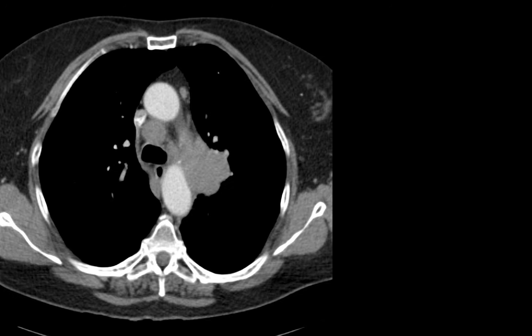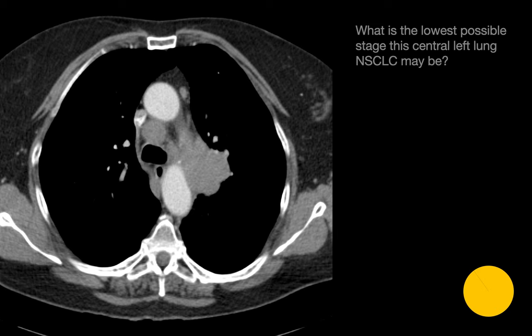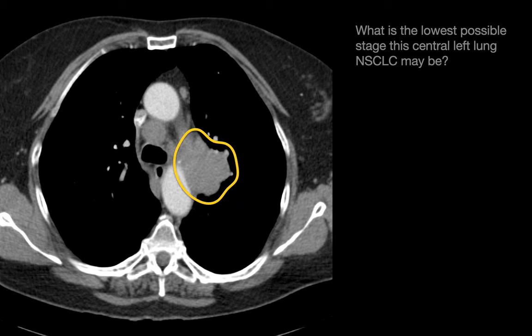This is a non-small cell lung cancer case. What's the lowest possible cancer stage this central lung cancer case may be? The imaging features include a central left lung mass that appears to invade the left hilum and mediastinum, and a bulky mediastinal lymph node that almost certainly lies to the right of the left lateral tracheal wall. The left lateral tracheal wall distinguishes right from left mediastinal lymph nodes superior to the tracheal bifurcation, making the bulky lymphadenopathy contralateral to this left-sided primary lung cancer. Contralateral mediastinal lymphadenopathy results in a non-small cell lung cancer stage of at least 3B.